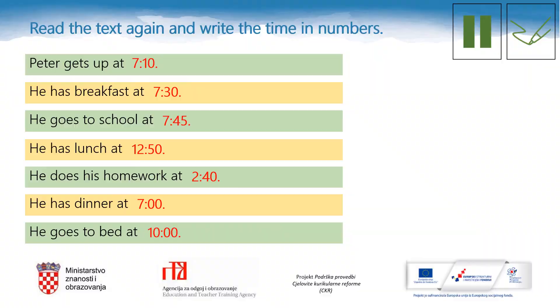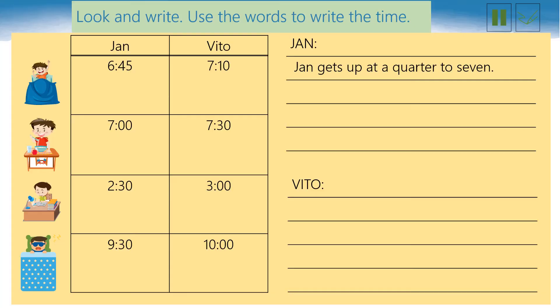Although Peter is my best friend, I have two more good friends — Jan and Vito. Let us write about their daily routines. Pause the video lesson now, look at the times and the pictures, and write the sentences. Use the words to write the time. You can take a look at the first example: Jan gets up at a quarter to seven. Pause the video lesson now and write the sentences in your notebooks.